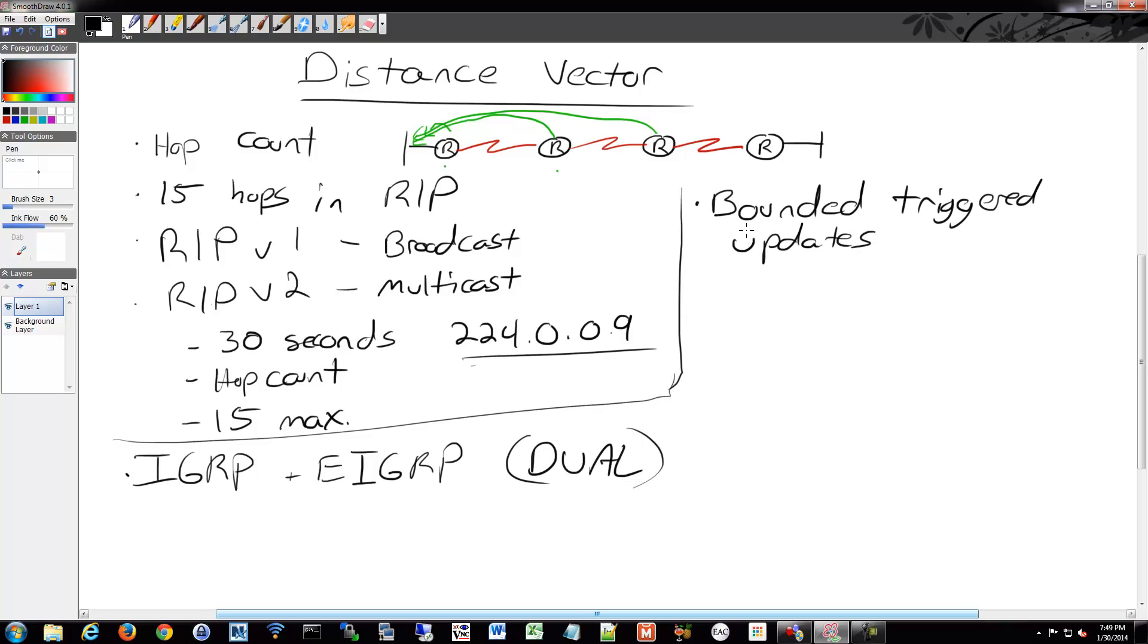What that does is give you a similar ability to OSPF where it will send updates about things that have changed only to those routers that need it. That's what the whole bounded, triggered updates means. It's triggered when it's needed and it's bounded to only devices that need to know about it.